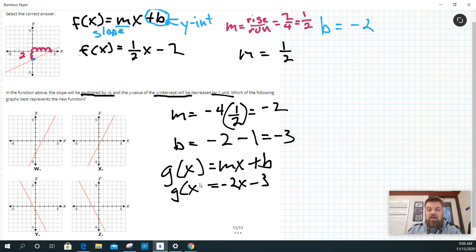So I'm going to look for a graph that intercepts at negative three. This one intercepts at negative one, it's not that one. This one intercepts at negative three, could be that one. This one does not intercept at negative three. This one intercepts at negative three.